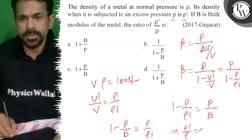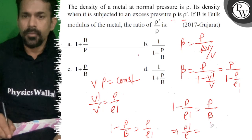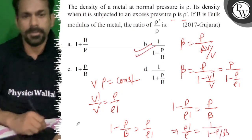So ρ dash upon ρ is equal to 1 upon 1 minus p by β. So the right answer is B. All the best.